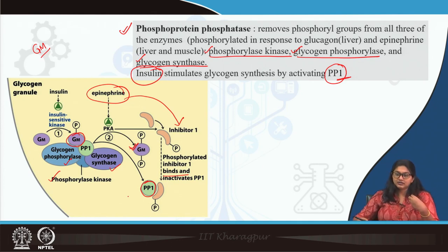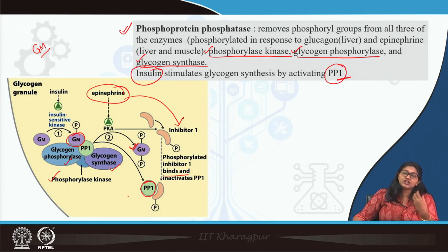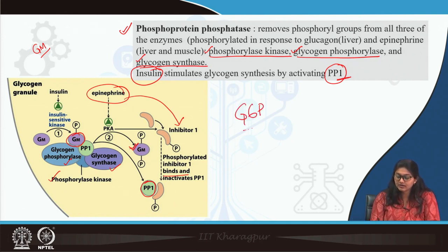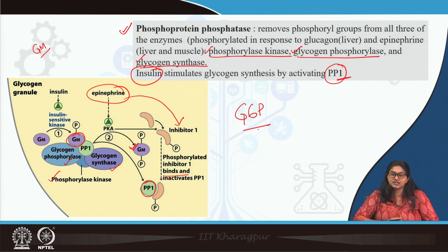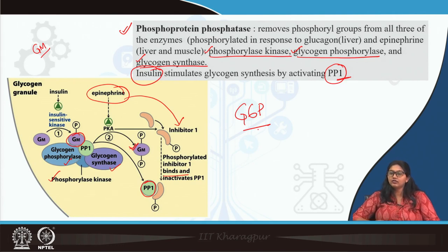Phosphoprotein phosphatase activity is activated by insulin, whereas it is inactivated by epinephrine. Glucose-6-phosphate is also an allosteric regulator and acts as an allosteric activator of phosphoprotein phosphatase. This is how phosphoprotein phosphatase is regulated in both glycogen synthesis and glycogen breakdown.